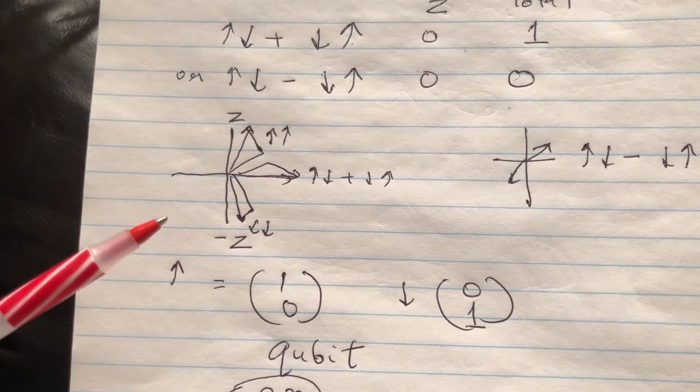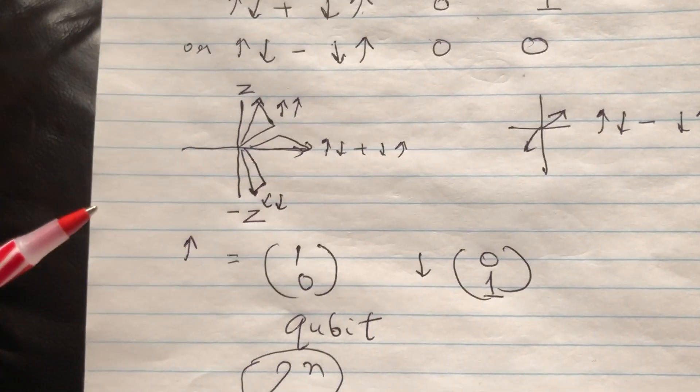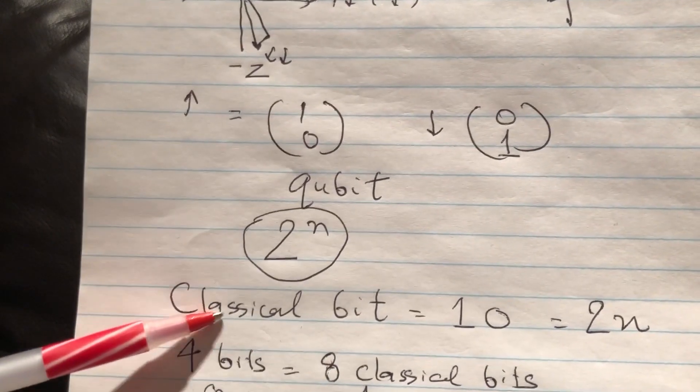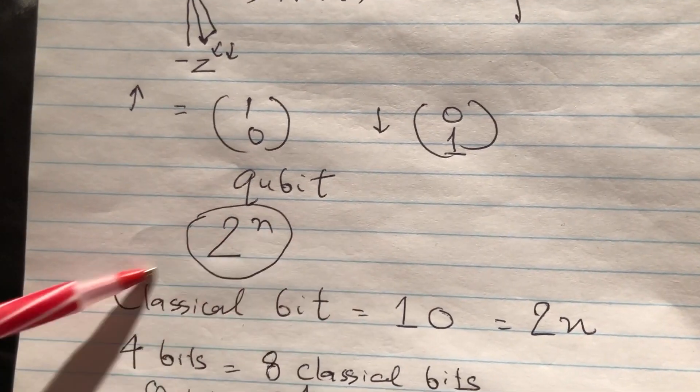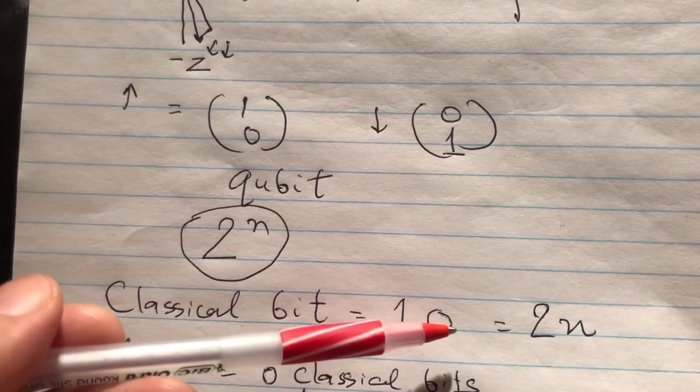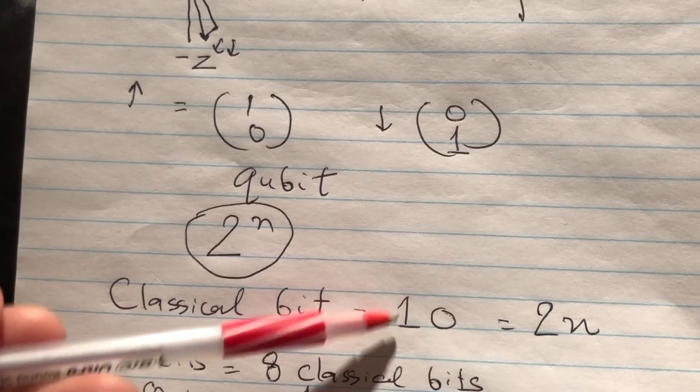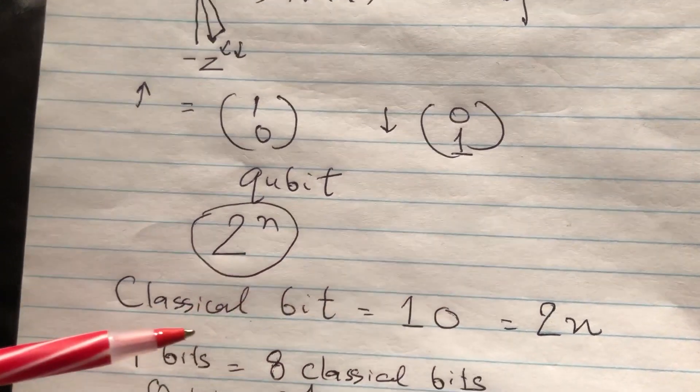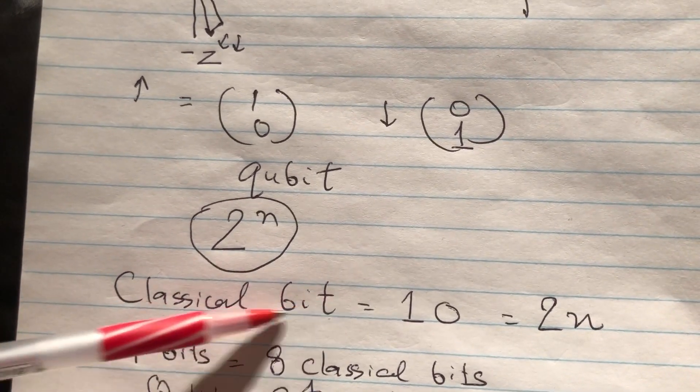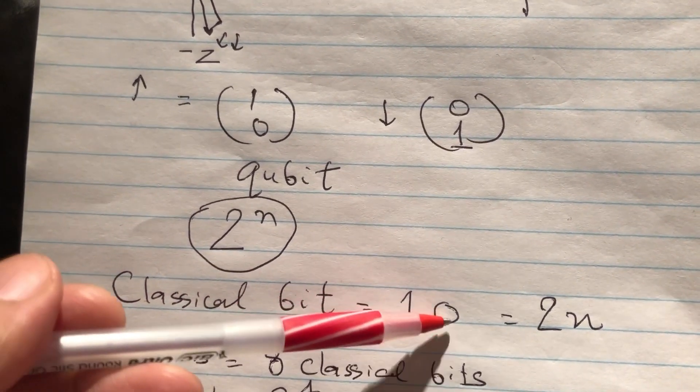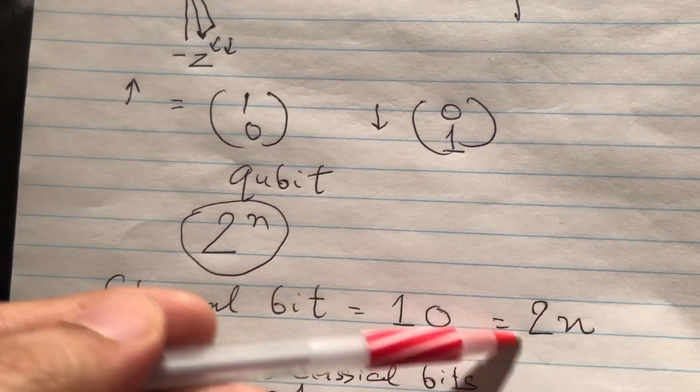We are coming to computing now. If you know anything about computing, you know about bits. A classical bit—all our computers are based on classical bits, which means zeros and ones—and that's all you need to build a computer. In terms of how many states a bit contains, a classical bit in our computer is one and zero, so it has two pieces of information. This is the number of states it has.